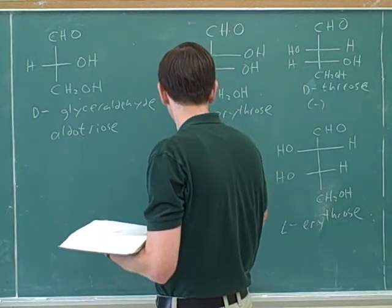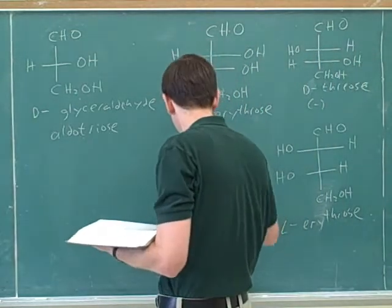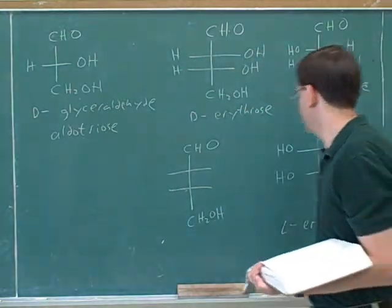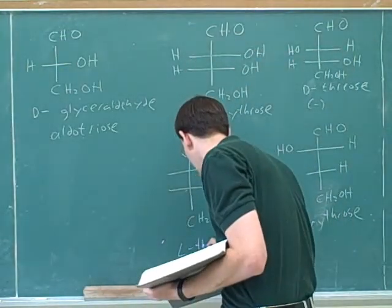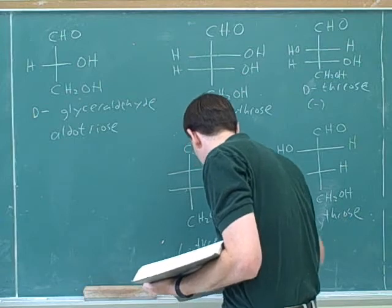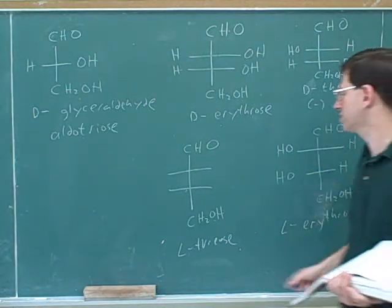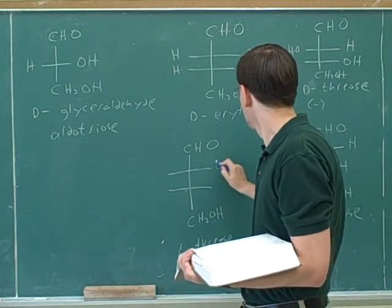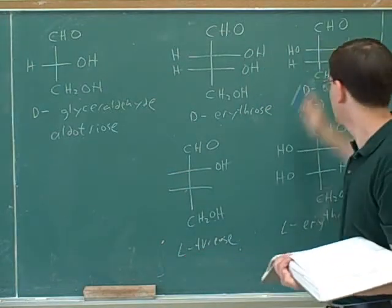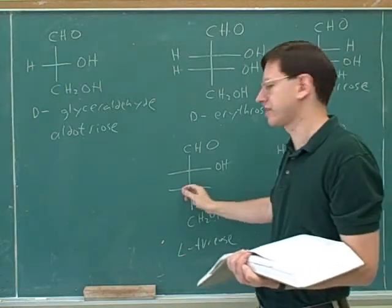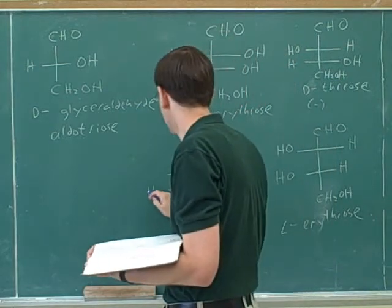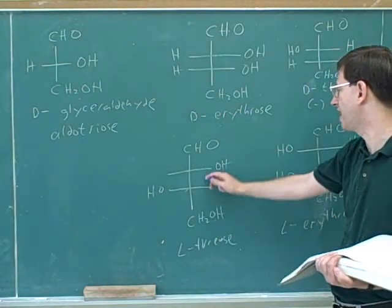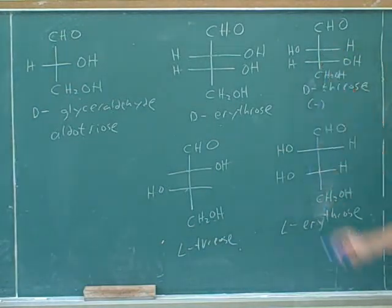To draw L-threose from D-threose: if the bottom hydroxyl in D-threose points left, for L-threose the upper hydroxyl should be on the right and the bottom hydroxyl on the left. This reverses both stereocenters, giving L-threose with opposite configuration at both stereocenters.